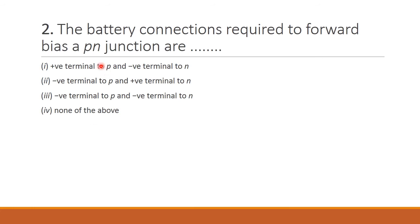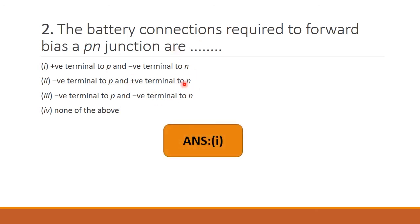Next question: The battery connections required to forward-bias a PN junction. Forward biasing means P-type is connected to positive and N-type is connected to negative. That is the condition for forward bias. The answer is option 1 — positive terminal to P and negative terminal to N.